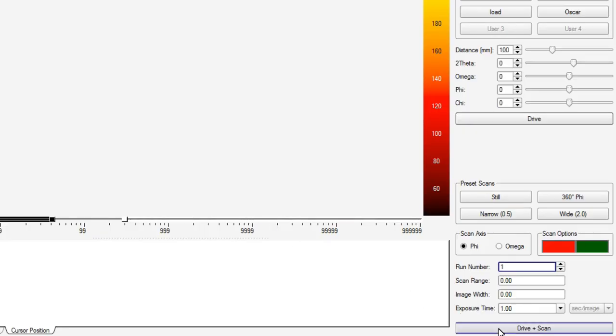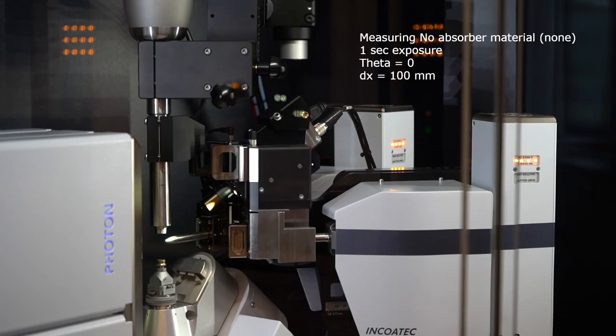Okay let's start with the first experiment the direct beam without anything in front of the detector. I put the detector 200 millimeter distance and to theta zero.